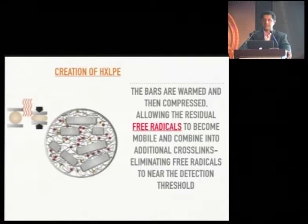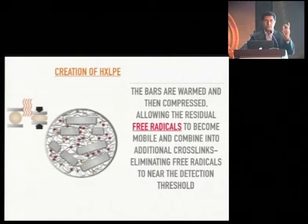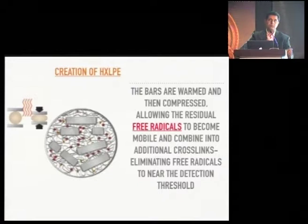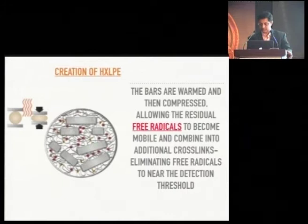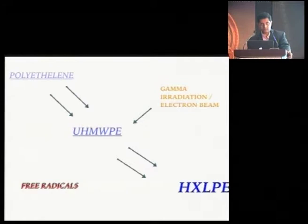Highly cross-linked polyethylene was created by gamma radiation, however with the exposure of free radicals. These free radicals cause cross-linking, which is why it is called highly cross-linked poly. But these free radicals also had one misadventure — when exposed to air or oxidized, they cause degradation of the poly, so it works both ways. Hence the progression from polyethylene to ultra-high molecular weight polyethylene to highly cross-linked polyethylene produced by gamma radiation.